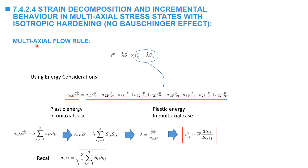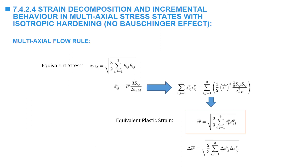The multi-axial flow rule states that the increment in plastic strain component ij equals the equivalent plastic strain increment multiplied by (3/2) times the corresponding deviatoric stress component divided by the von Mises stress. Inspired by the term equivalent stress for the von Mises stress, the equivalent plastic strain increment is related to the plastic strain component increments by a similar relationship: the equivalent plastic strain increment equals sqrt(2/3) multiplied by the square root of the sum of delta epsilon_p_ij * delta epsilon_p_ij over all components.